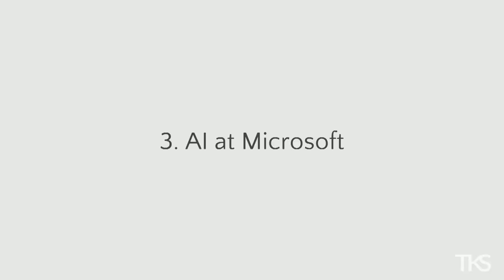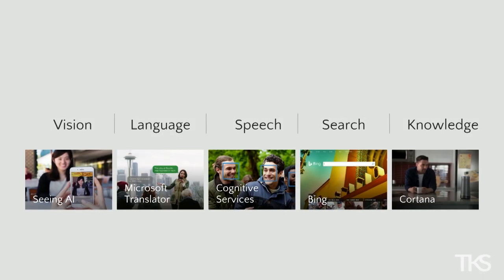At Microsoft we look at AI in five pillars: vision, language, search, speech, and knowledge. In my day-to-day job I work with customers, and in my personal life I'm really passionate about AI for good projects. If you follow me on social media — LinkedIn, Twitter — my favorite hashtag is AI for good these days.